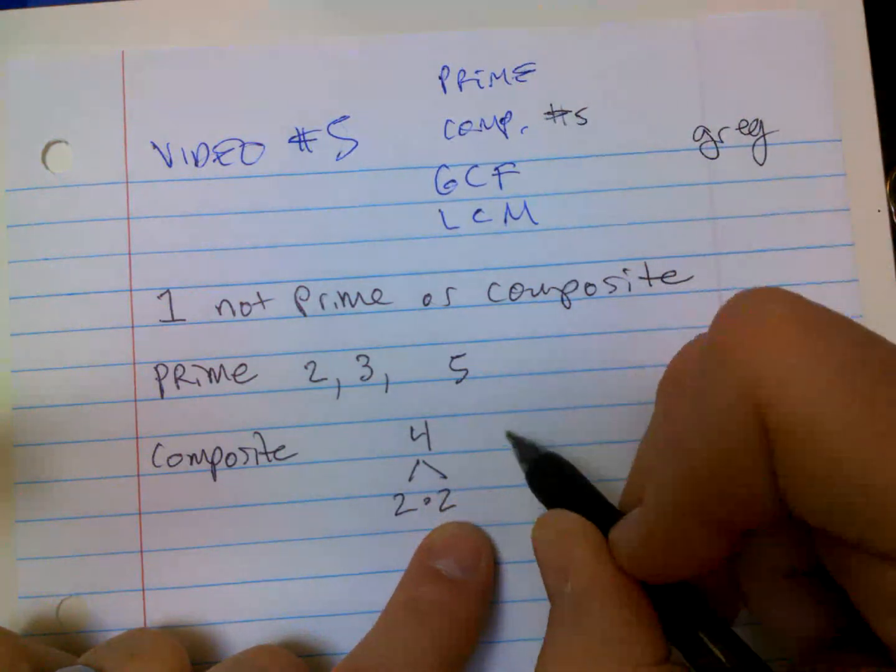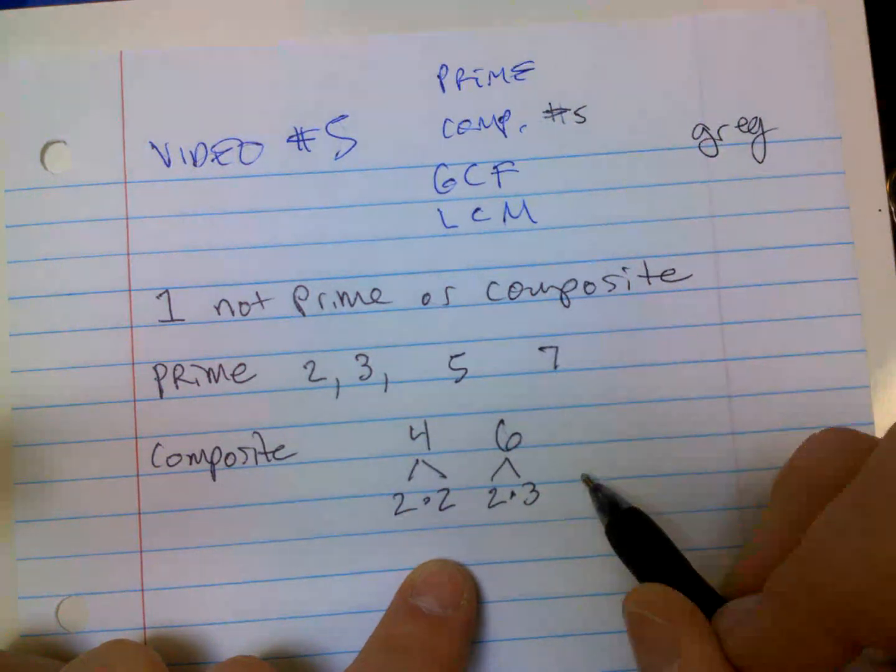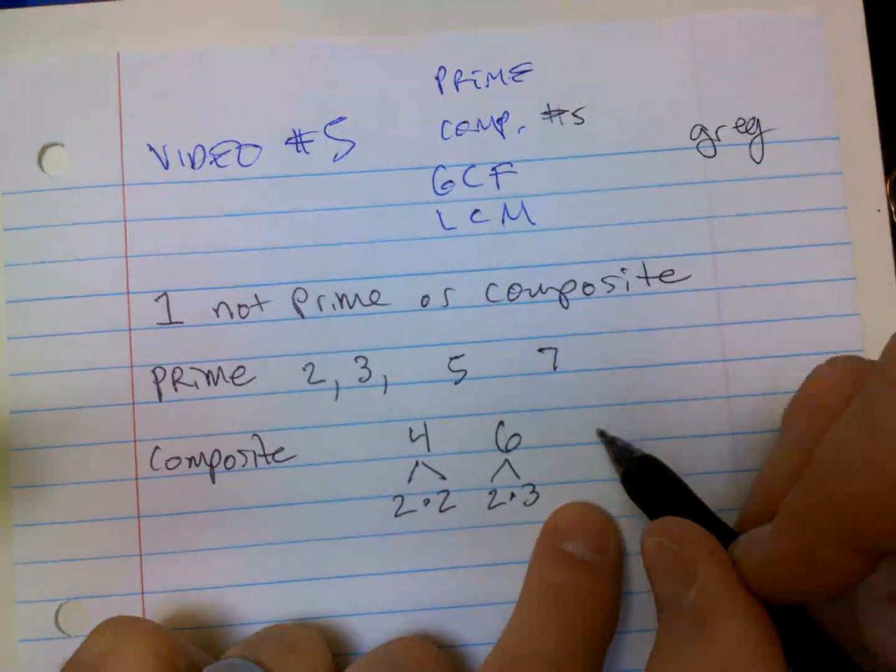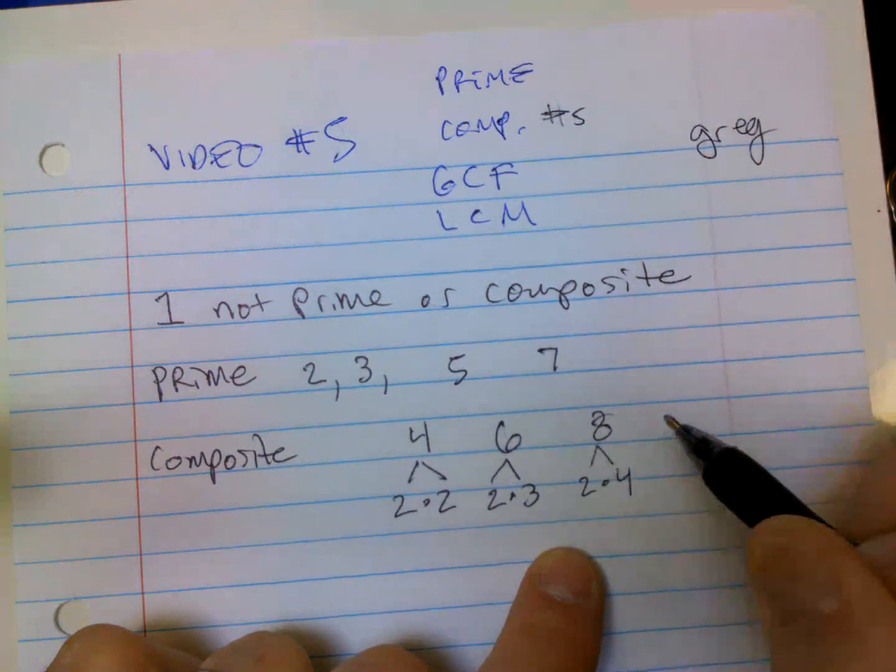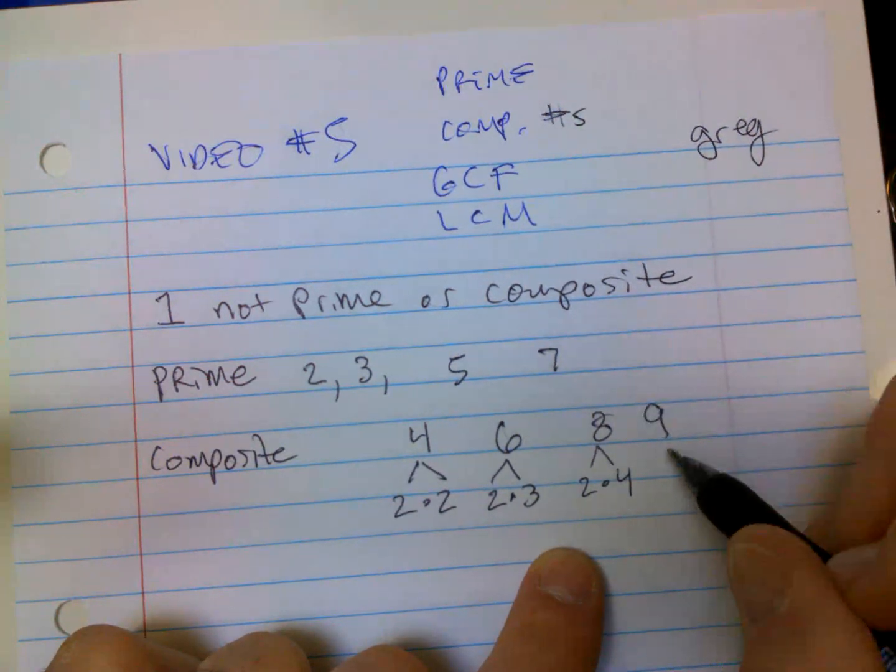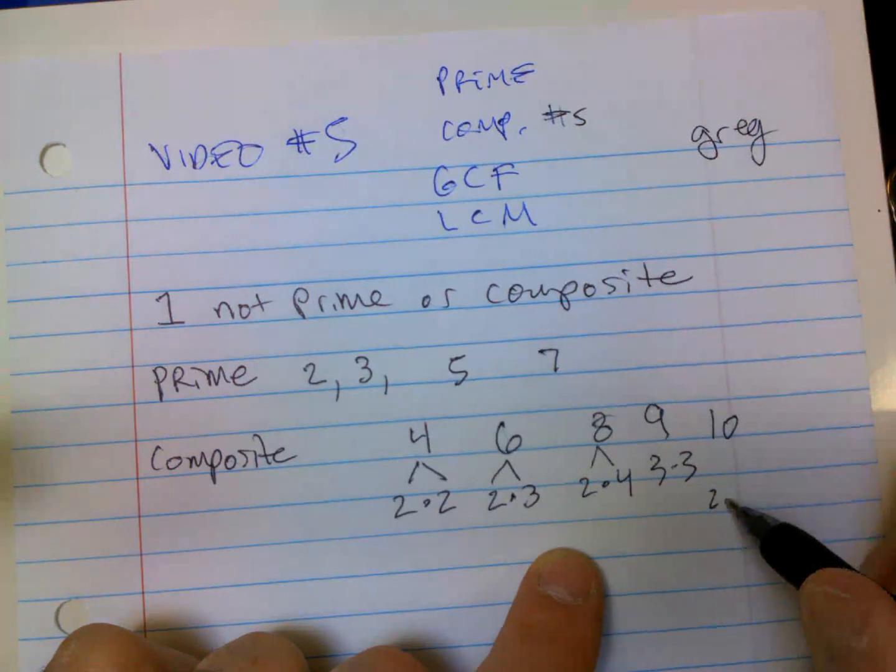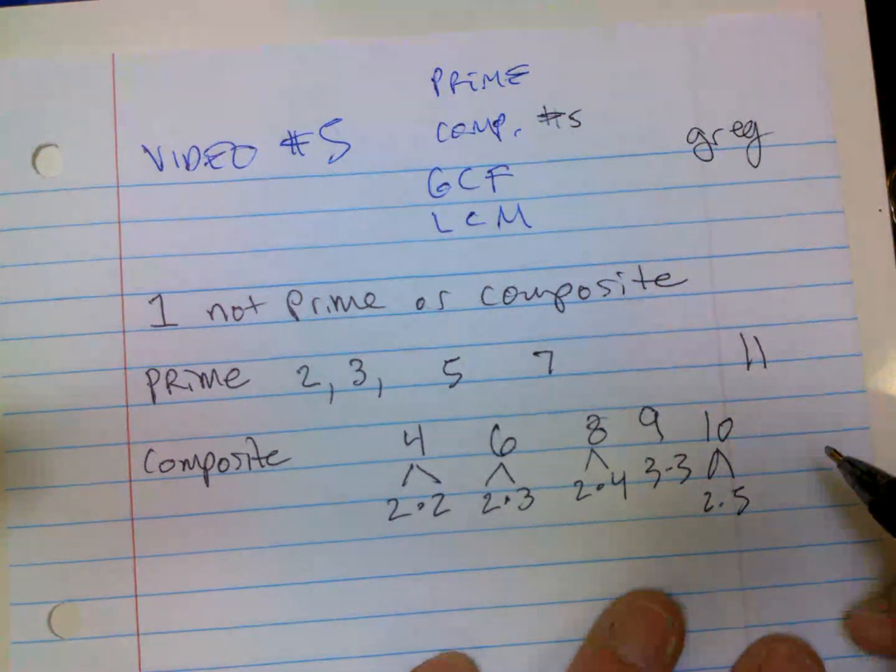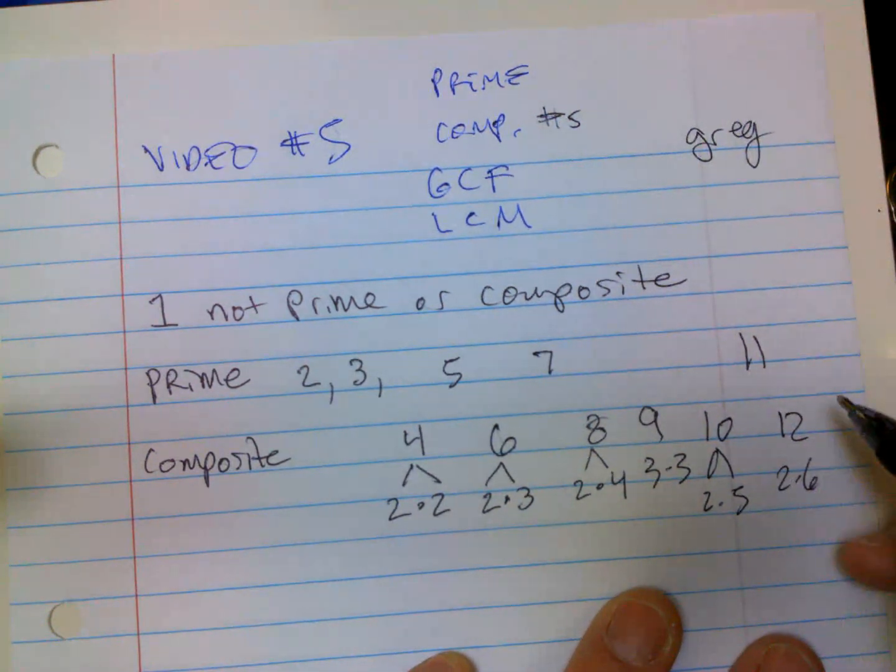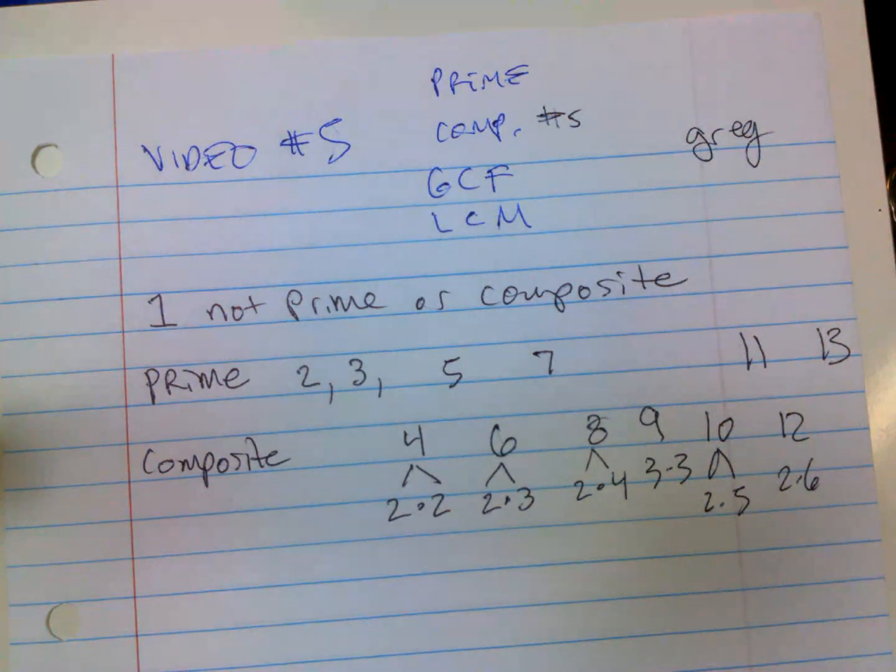Six is two times three. Seven is prime. Eight is two times four, or two times two times two, whichever way you want to do it. Nine is three times three. Ten is two times five. Eleven is prime. Twelve is two times six. Thirteen is prime. There's some more past that, it keeps going.